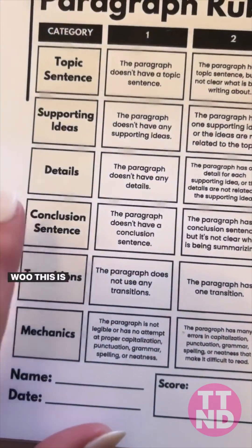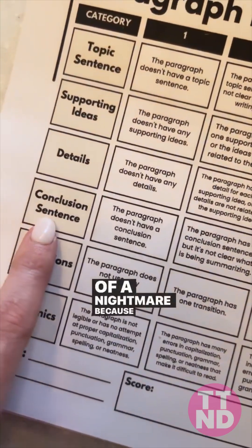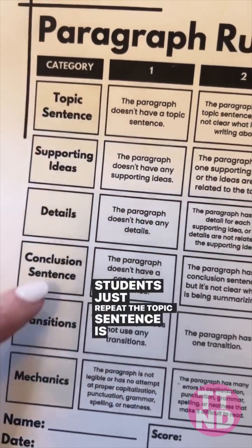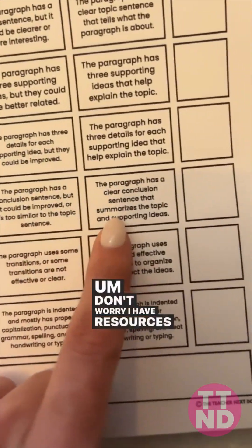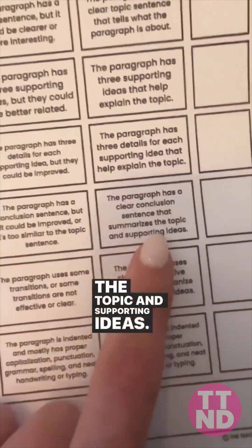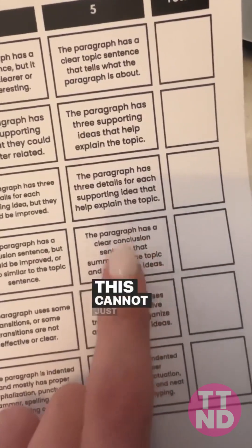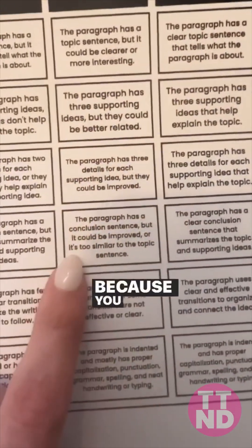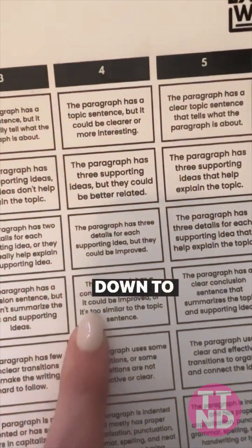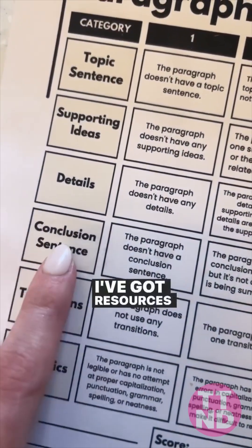Conclusion sentence — this is hard. Teaching conclusion sentences in upper elementary is kind of a nightmare because teaching it the right way and not having students just repeat the topic sentence is a task all in itself. The paragraph has a clear conclusion that summarizes the topic and supporting ideas. I make it very clear to my students: this cannot just be a repeat of the topic sentence, because being too similar to a topic sentence drops you to a four on the rubric. Teaching that — don't fear, I've got resources for you — it's hard.